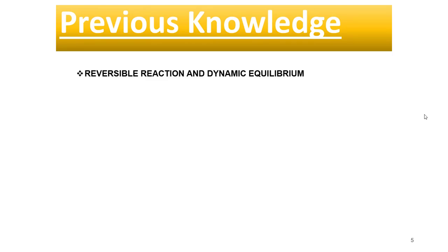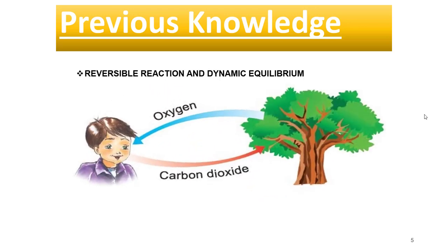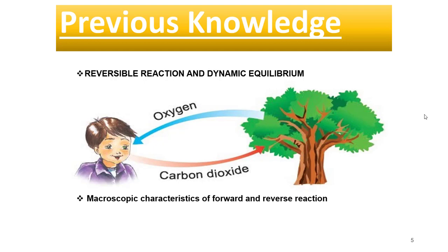Let's have a look at the previous knowledge. Students, we have already learned about reversible reactions and dynamic equilibrium. Reversible reactions are such reactions in which the reactants react to form products and products react to form the reactants. We have also learned about the macroscopic characteristics of forward and reverse reactions, and macroscopic characteristics of dynamic equilibrium.